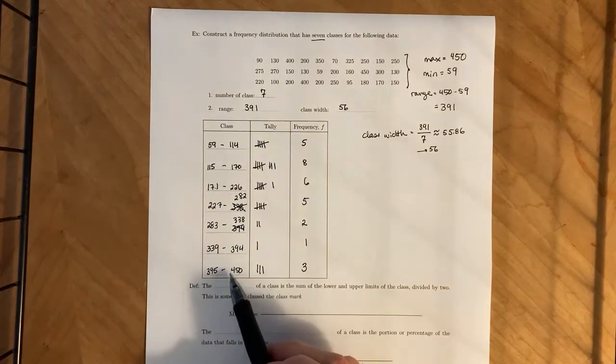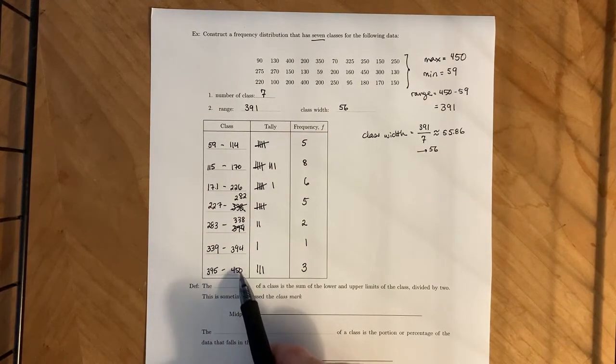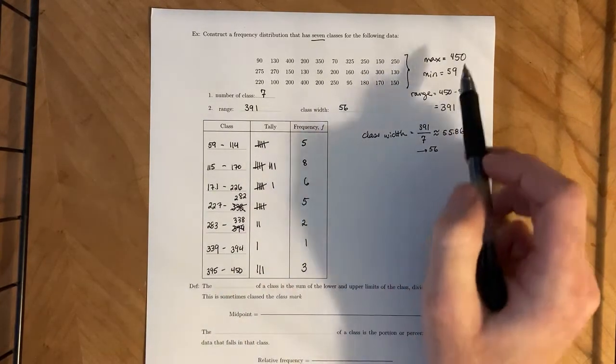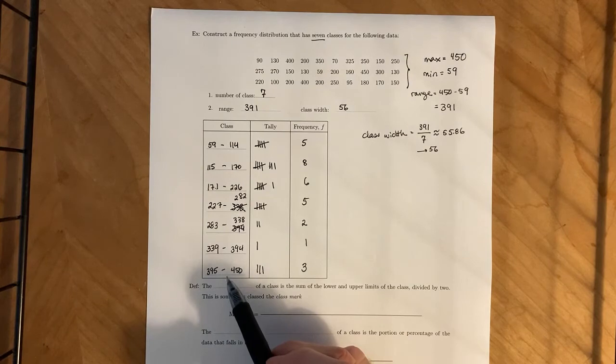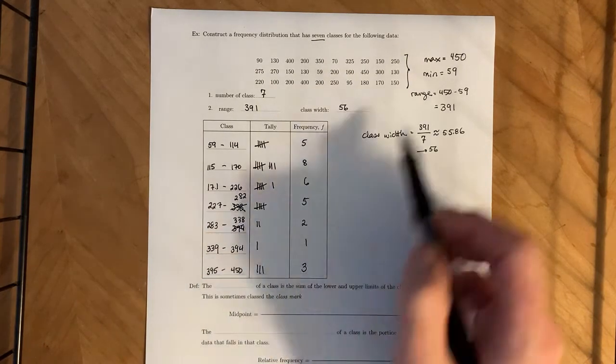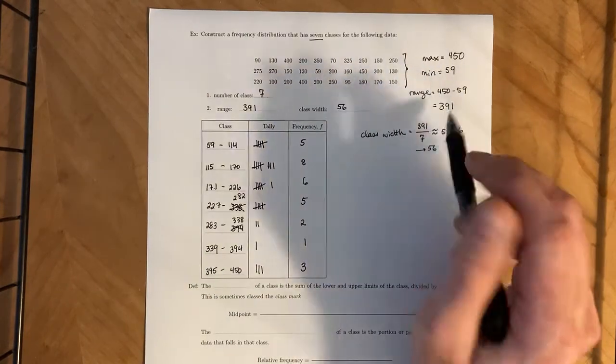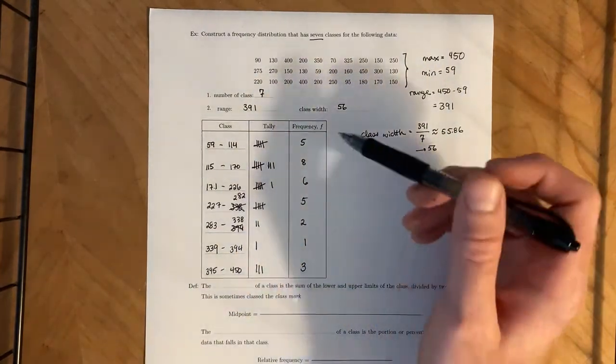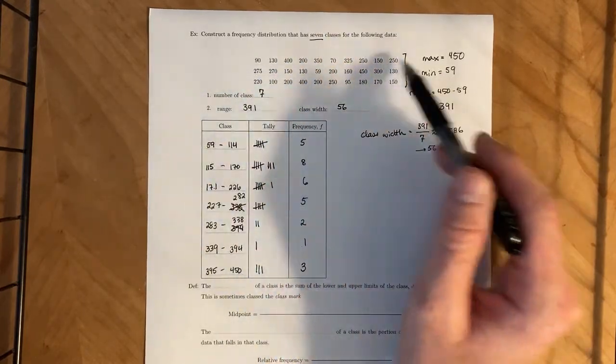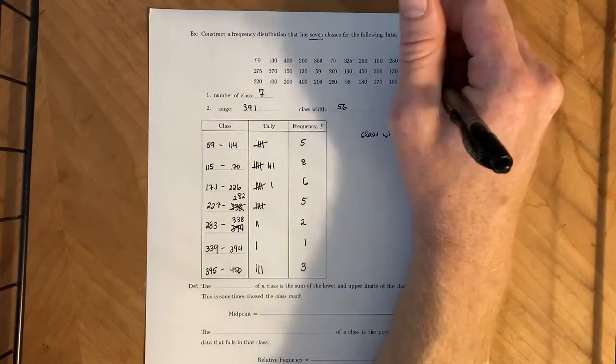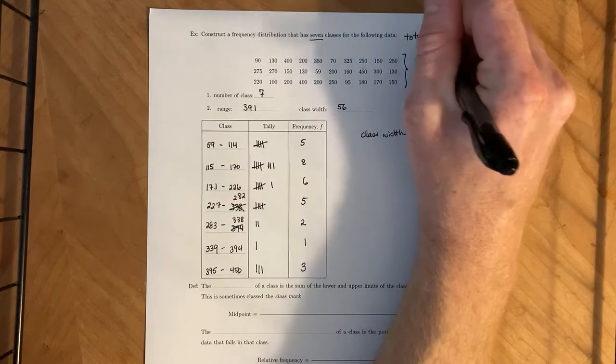So notice, right, 450, which was our max value, landed up here, which is really nice. But that doesn't always have to happen when you're doing this type of construction. You can have an upper class limit that isn't the max value. Just something to pay attention to. Now, if we count up all these data sets, all the data values, we have a total of 30.